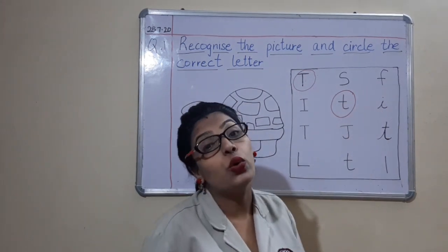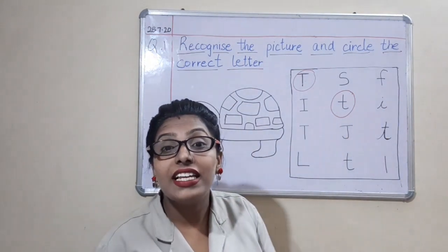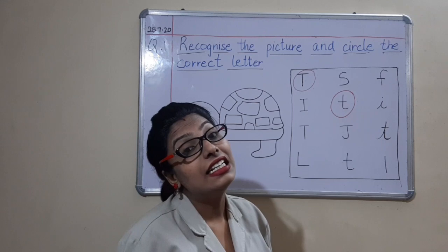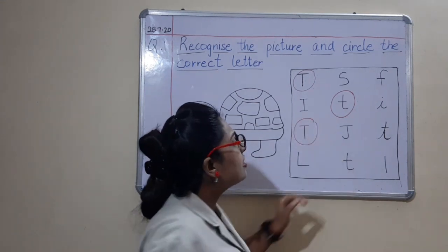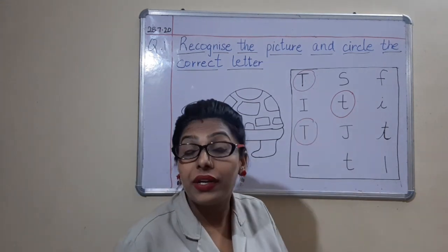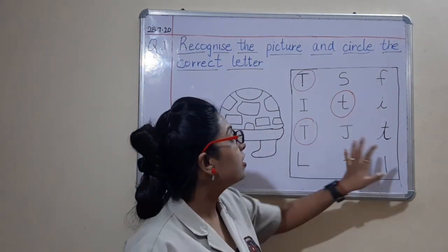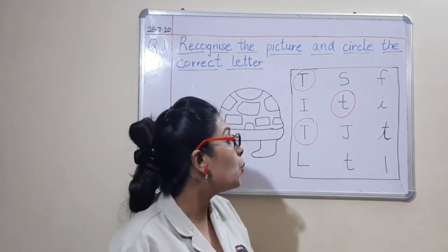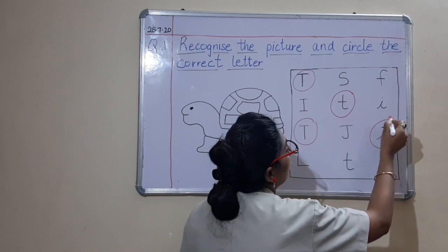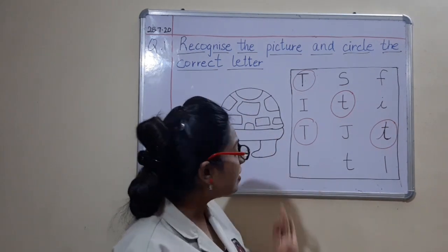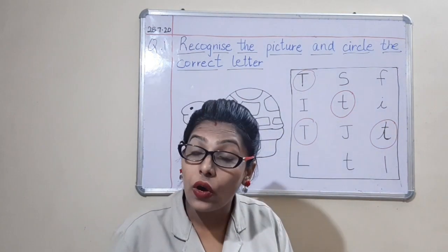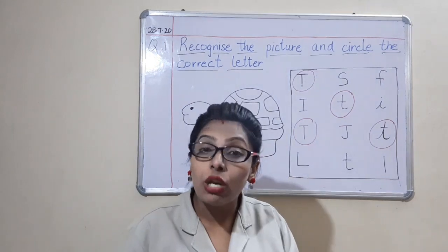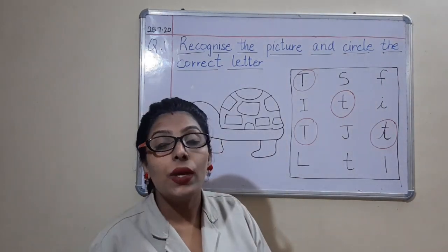Is this letter T? No, this is small cursive letter I. Is this letter T? Yes, capital block letter T — so we will circle it. Is this letter T? No, capital block letter J — so we will leave it. Is this letter T? Yes, cursive letter T — so we will circle it. Is this letter T? Yes, cursive letter T — so we will circle it.